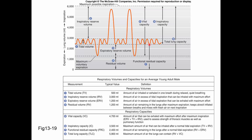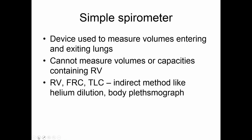Functional residual capacity tends to be measured more than residual volume because this is a natural resting place where the recoil of the lungs and the expansion of the chest balance, making it a much more repeatable measure. You really have to coach somebody to get down to their residual volume. We use something called helium dilution to measure FRC. Residual volume, functional residual capacity, and total lung capacity all require an indirect method like helium dilution or body plethysmograph.